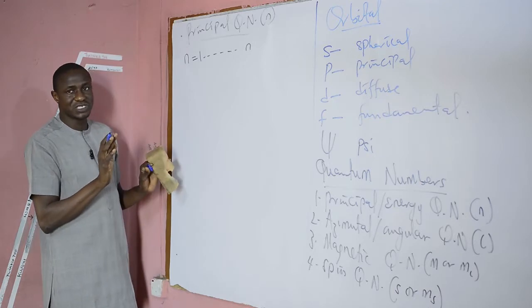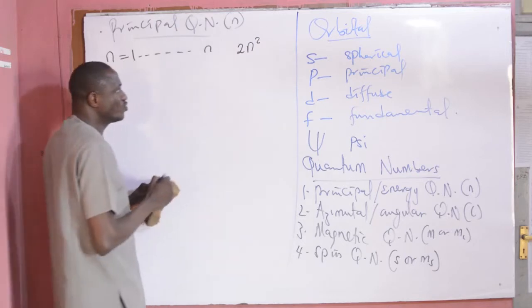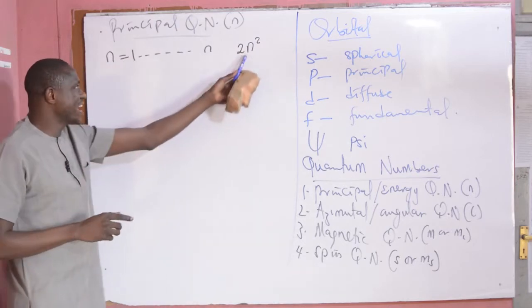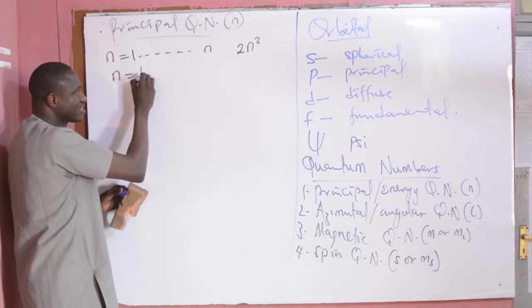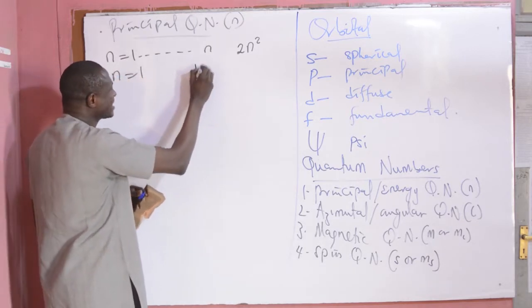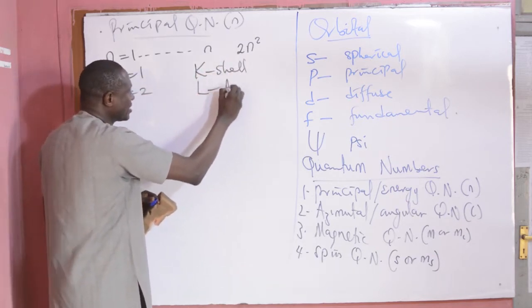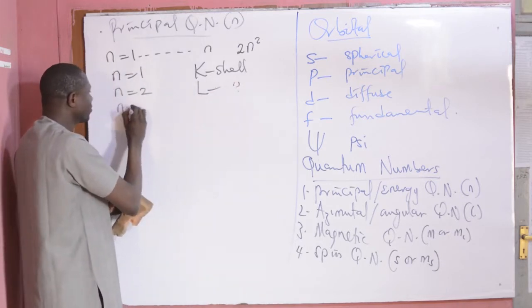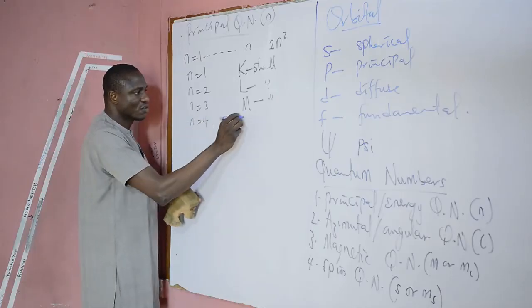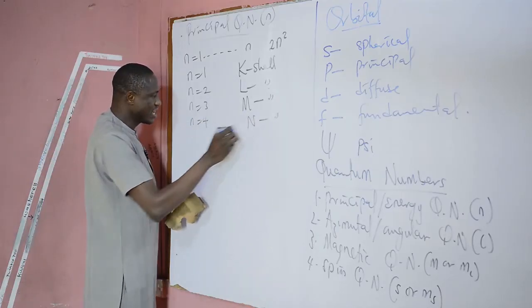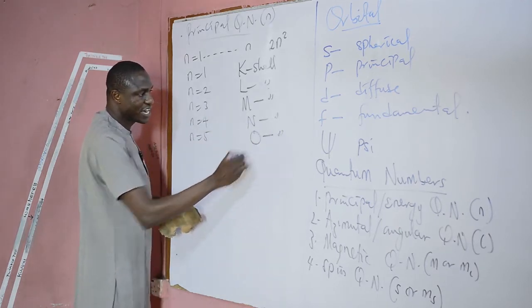The maximum number of electrons that can occupy each shell is given as 2N², where N is the principal quantum number. When N equals 1, that is designated as K shell. When N equals 2, we have L shell. When N equals 3, we have M shell. When N equals 4, we have N shell. And when N equals 5, that is the O shell, and so on.